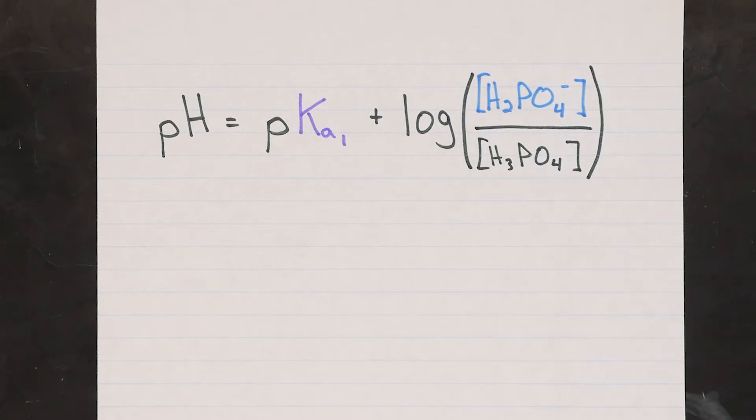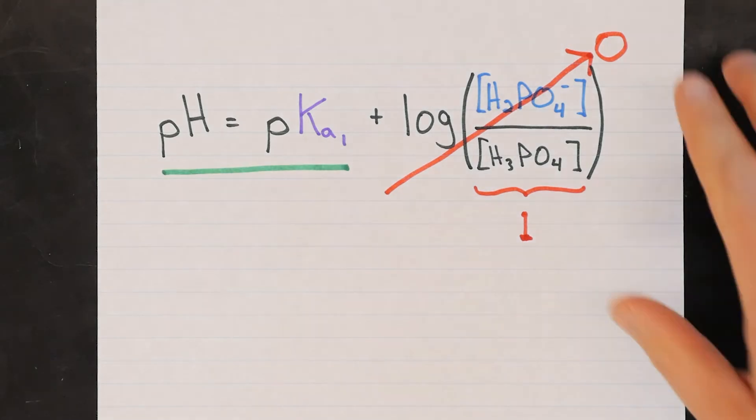But, the good news is that if the concentrations of conjugate acid and base were equal, the ratio would be equal to 1, and the log of 1 is just 0. So we just need to somehow measure the pH when we're reasonably sure that the conjugate acid and base are at the same concentration. So how will we do that?